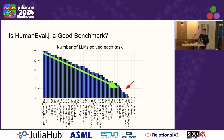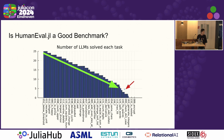Is HumanEval.jl a good benchmark? Here I plot the number of language models that solved each task. I used 25 language models I can access to. The x-axis sorts tasks from easiest to hardest. The tasks in HumanEval.jl are still well-distinguishable. Only for the harder problems there is a small cliff, so maybe we should add more harder tasks to this benchmark.